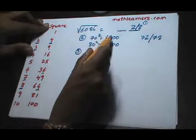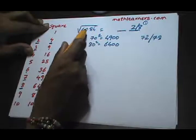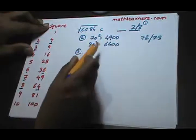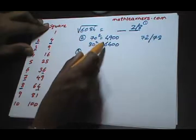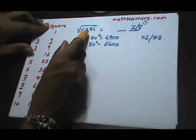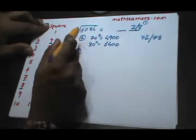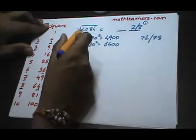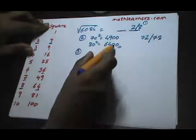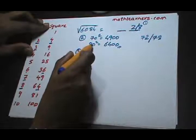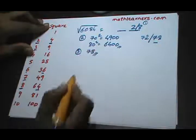If we consider 4900, then 6084 is almost 1000 greater. If we consider 6400, the difference is almost 400. So 6084 is clearly closer to 6400, meaning the square root is closer to 80. Therefore our answer is 78.